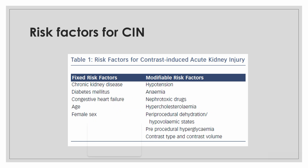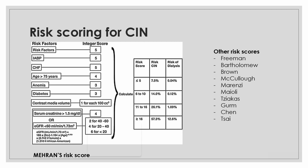There are multiple risk scores available for contrast-induced nephropathy. Mehran's risk score is the most validated. In this score, use of IABP, congestive cardiac failure, age more than 75 years, presence of anemia, diabetes, contrast media volume, and baseline serum creatinine are used for scoring. Higher the score, higher the risk of contrast-induced nephropathy and higher the risk of dialysis.